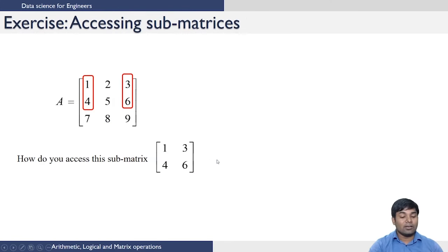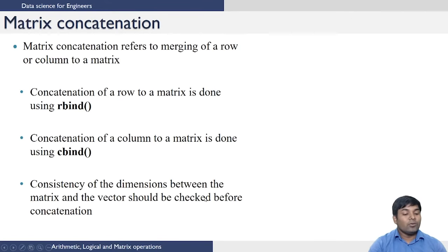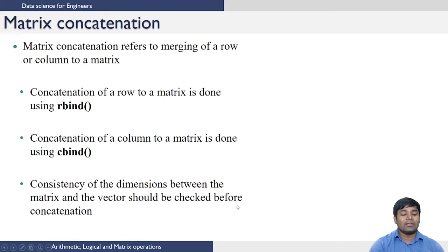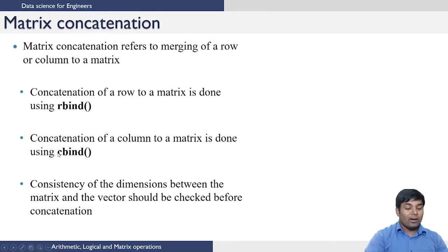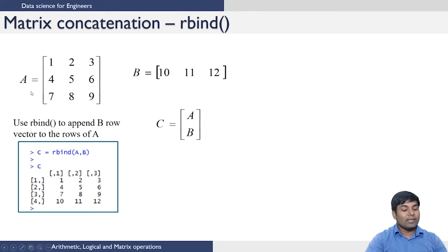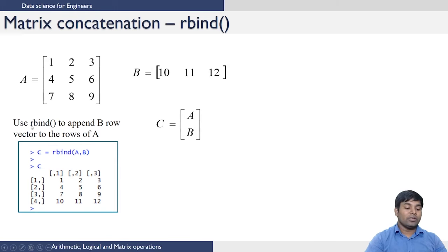You can try this as an exercise for accessing sub-matrices. Next we move on to another important operation on matrices which is matrix concatenation. Matrix concatenation refers to merging rows or columns to an existing matrix. If you want to add a row to the existing matrix you can do so using the rbind command. If you want to add a column to a matrix you can do so using the cbind command. One thing to keep in mind is that you must ensure consistency of dimensions before doing matrix concatenation. Let us illustrate how rbind works — suppose you have matrix A and matrix B and you want to concatenate matrix B as a row in matrix A.